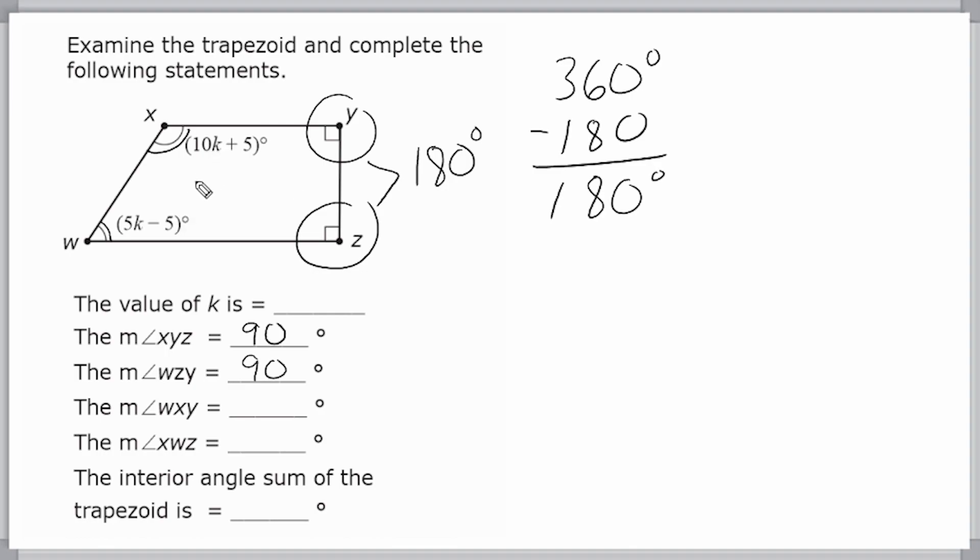So what we're going to do is take both of these expressions and add them together. We're going to say that 10k plus 5 and 5k minus 5 is equal to 180 degrees. Basically, these two angles are supplementary angles.